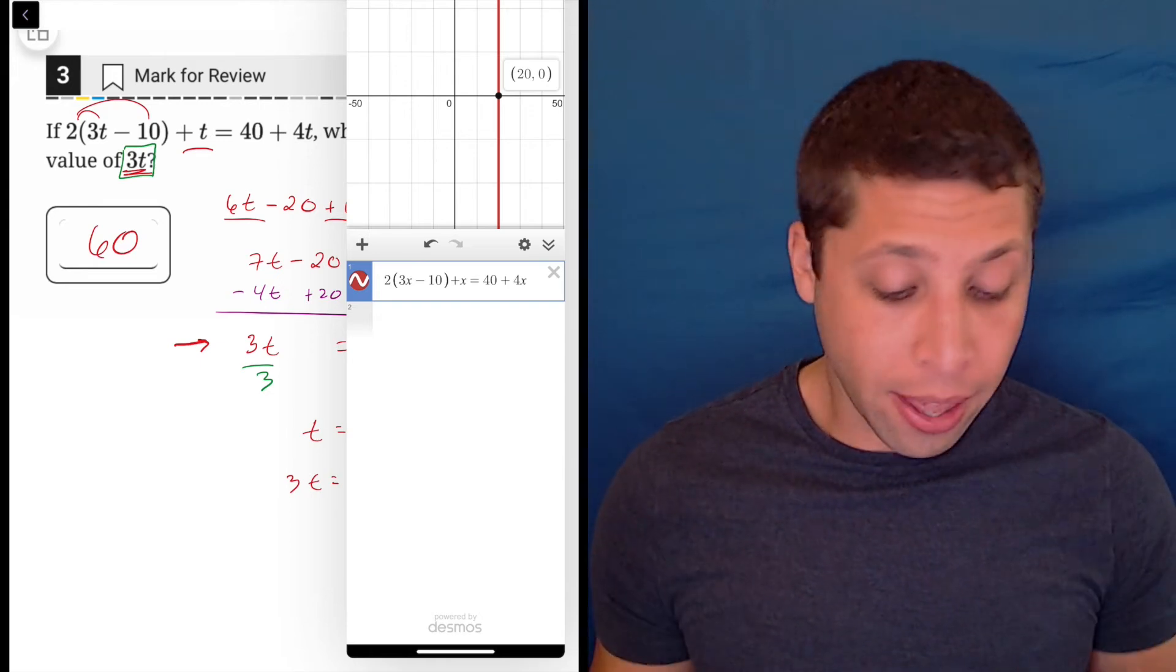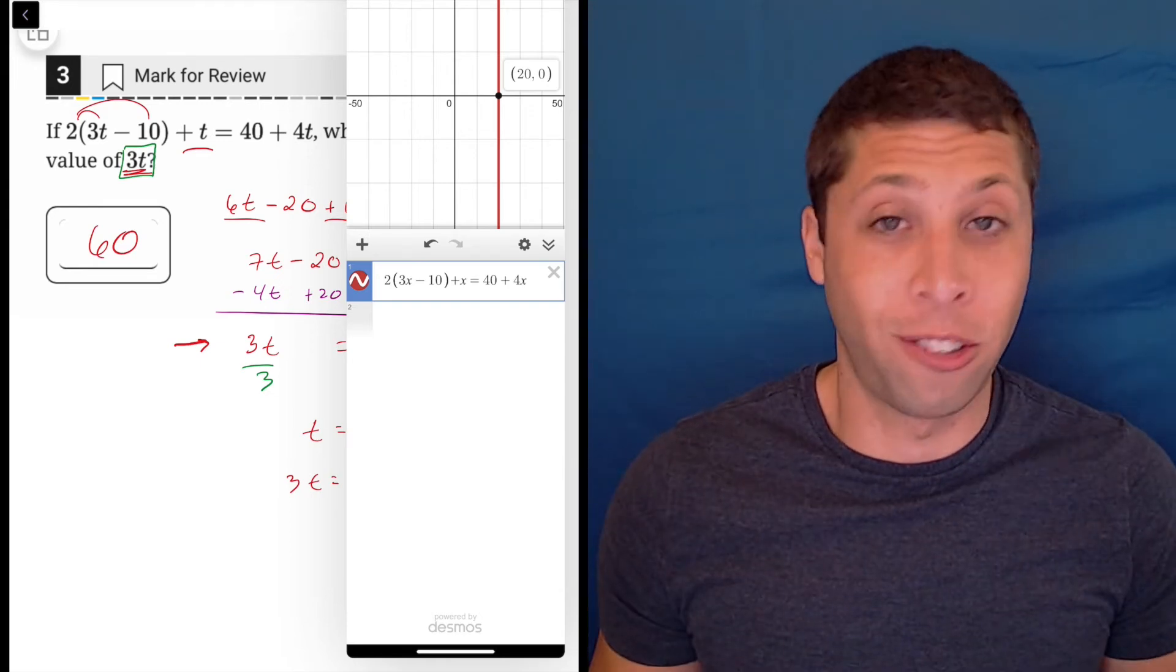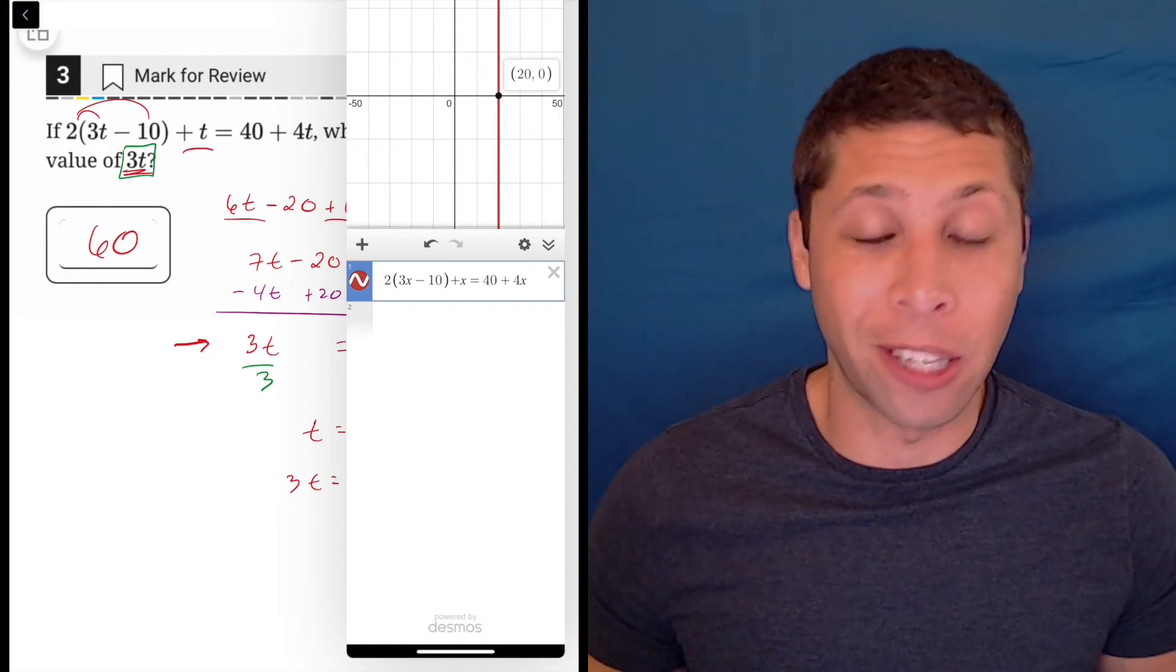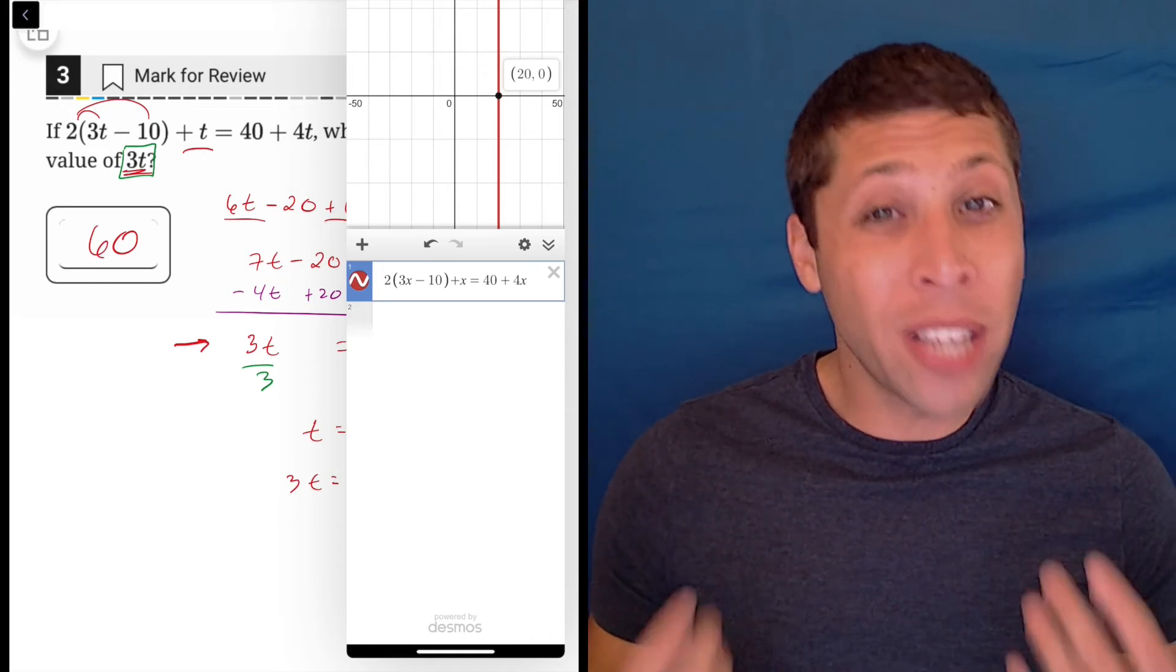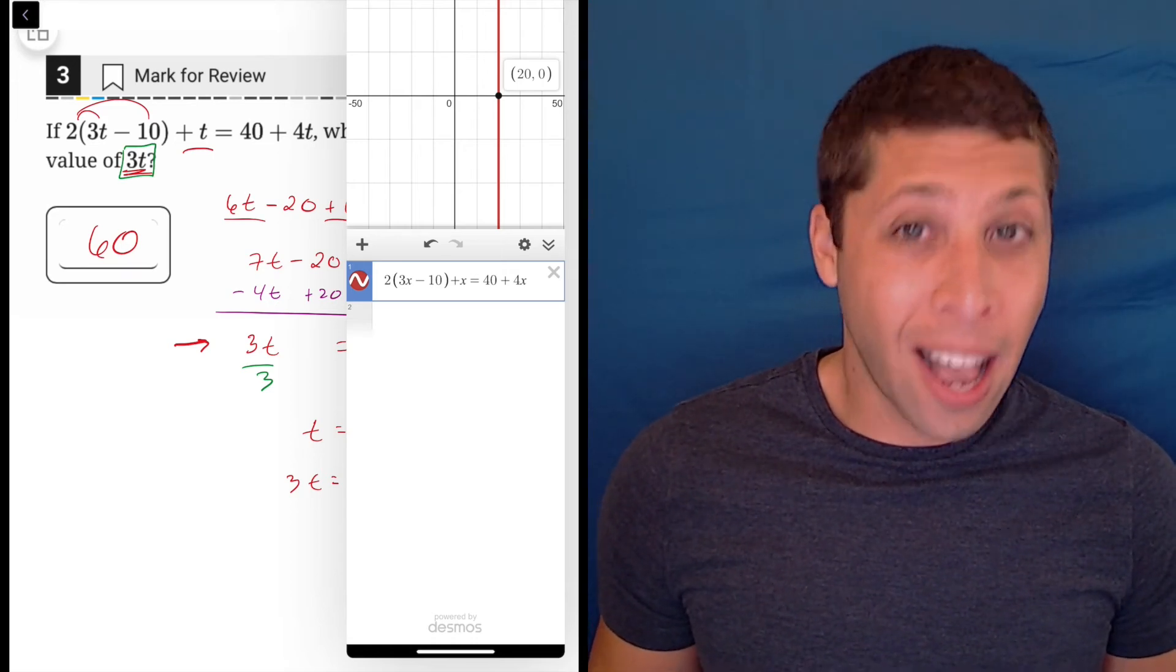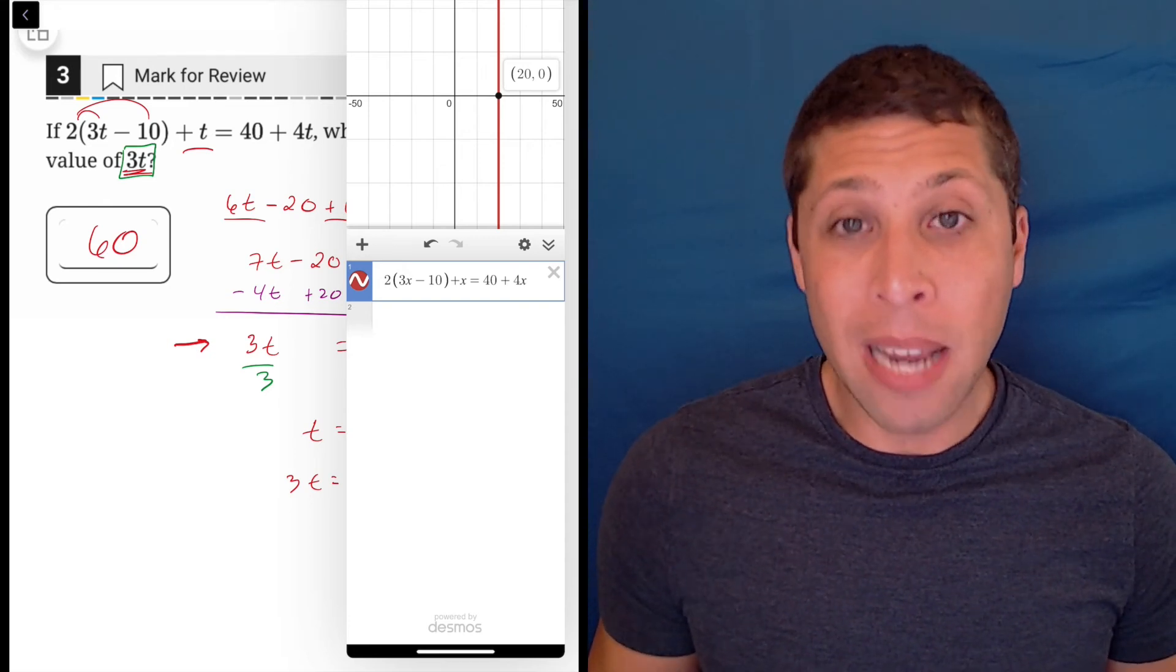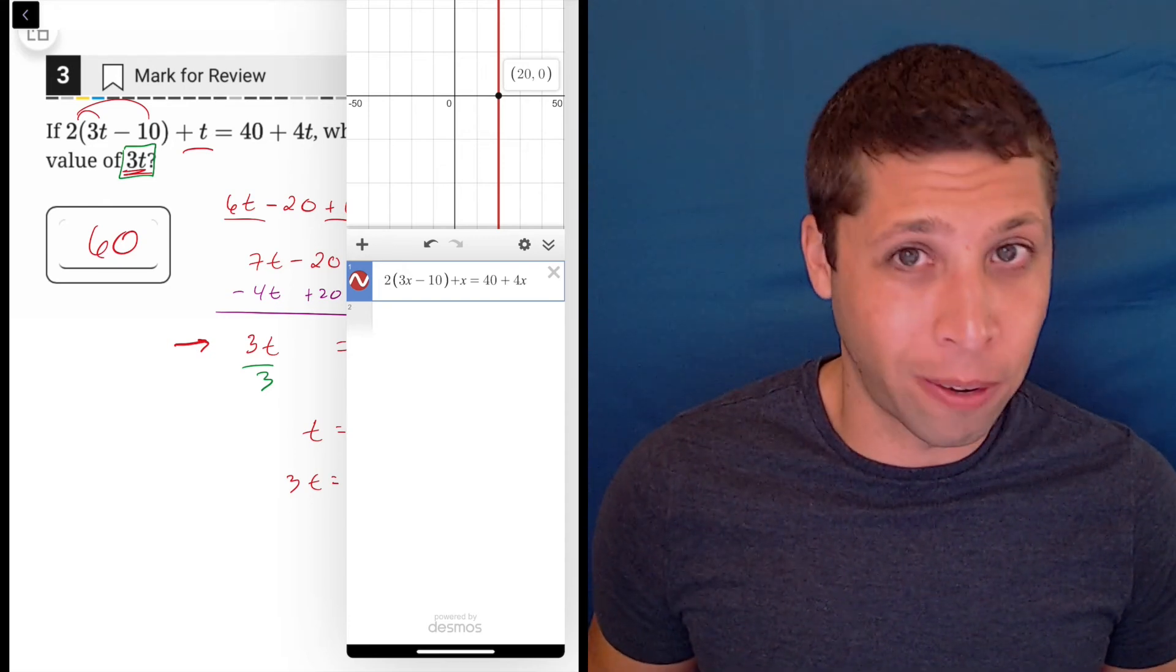If you're good at algebra, I think you're probably going to very confidently be able to just solve this with normal moving things across equals. But if you tend to make a lot of careless mistakes with algebra, I don't know, the calculator might solve a lot of that for you. So it might be okay, you got to make sure you enter it correctly.